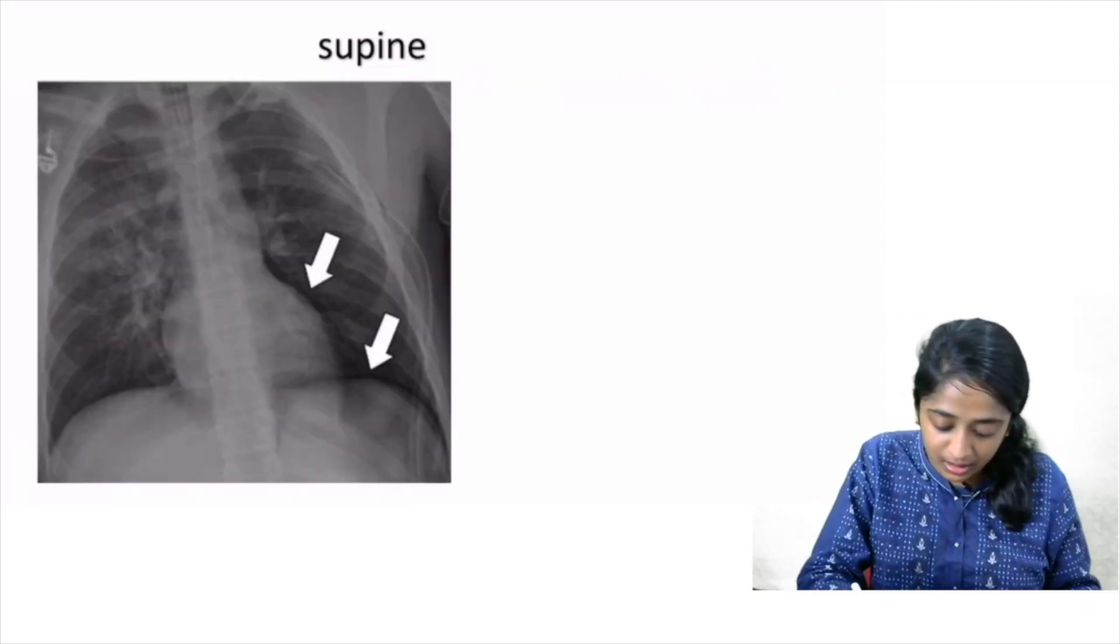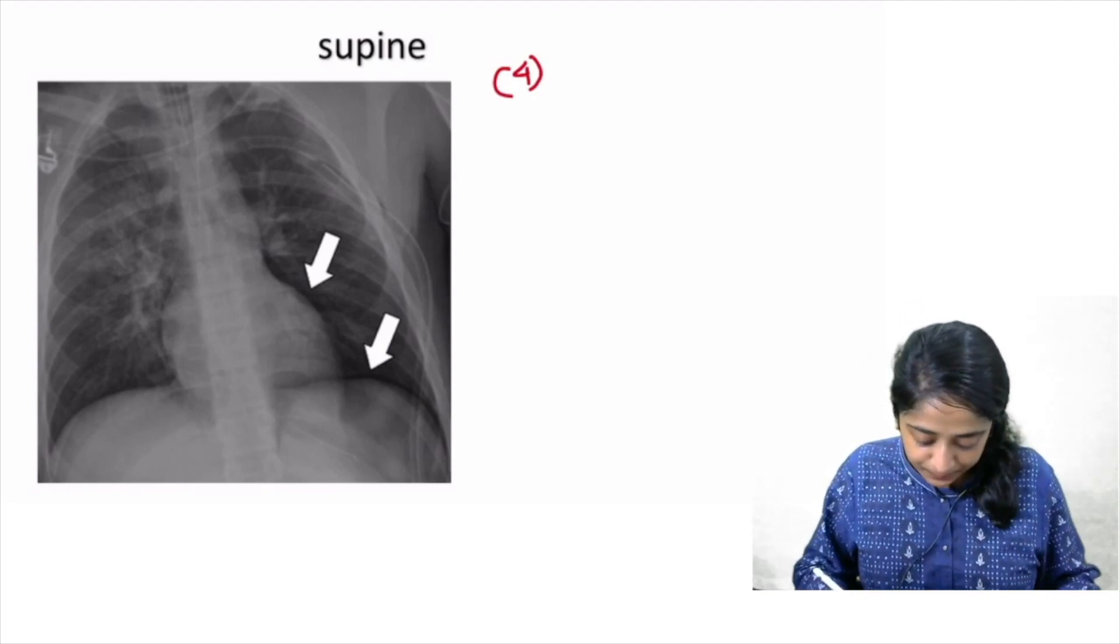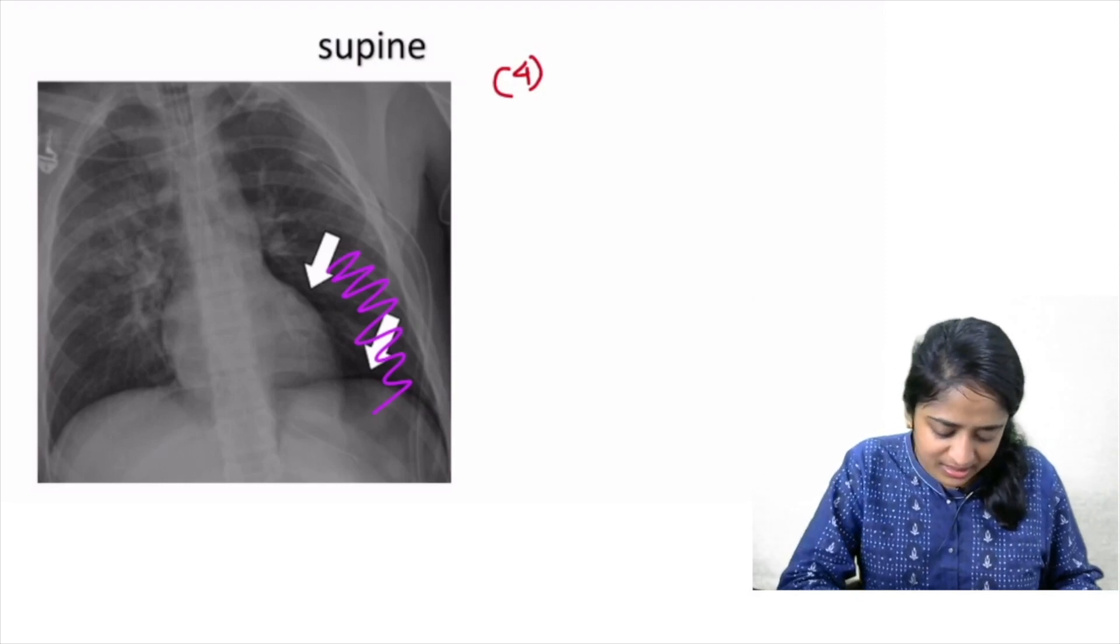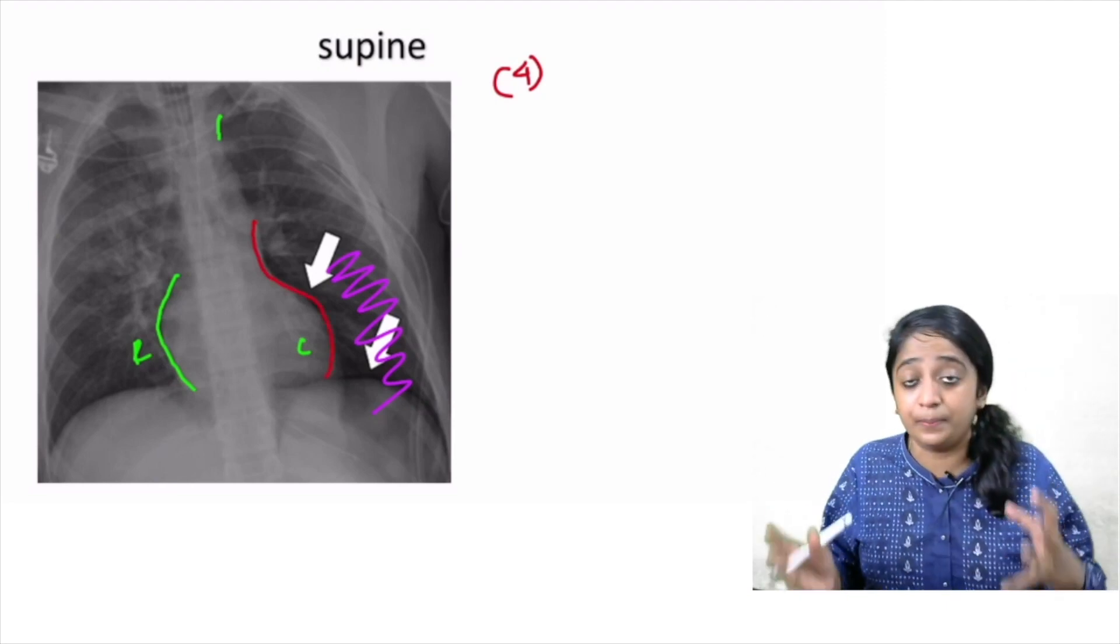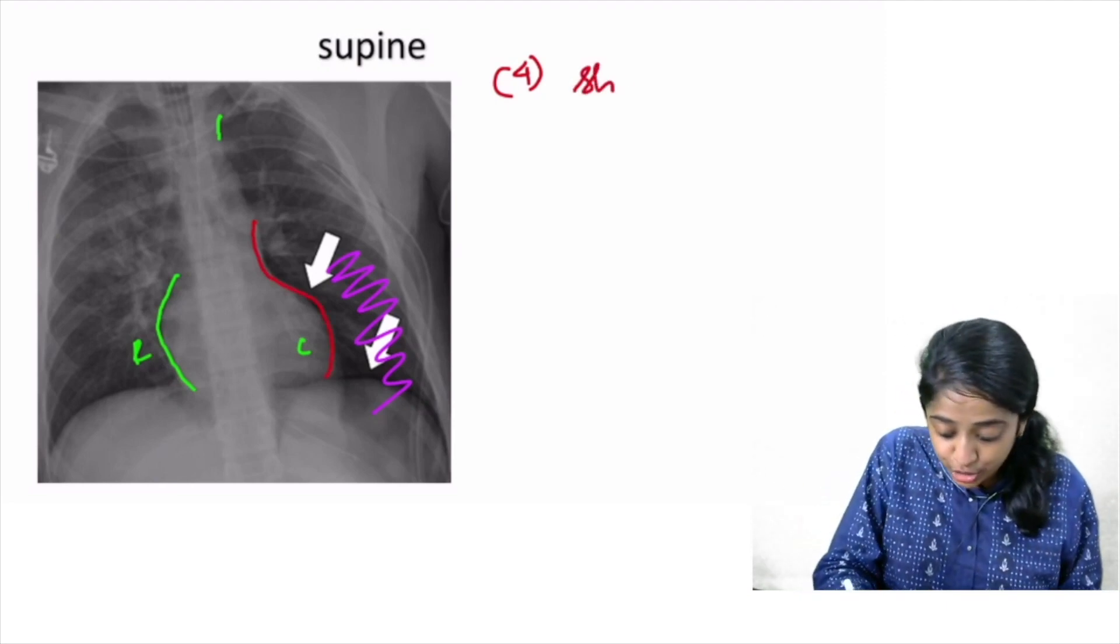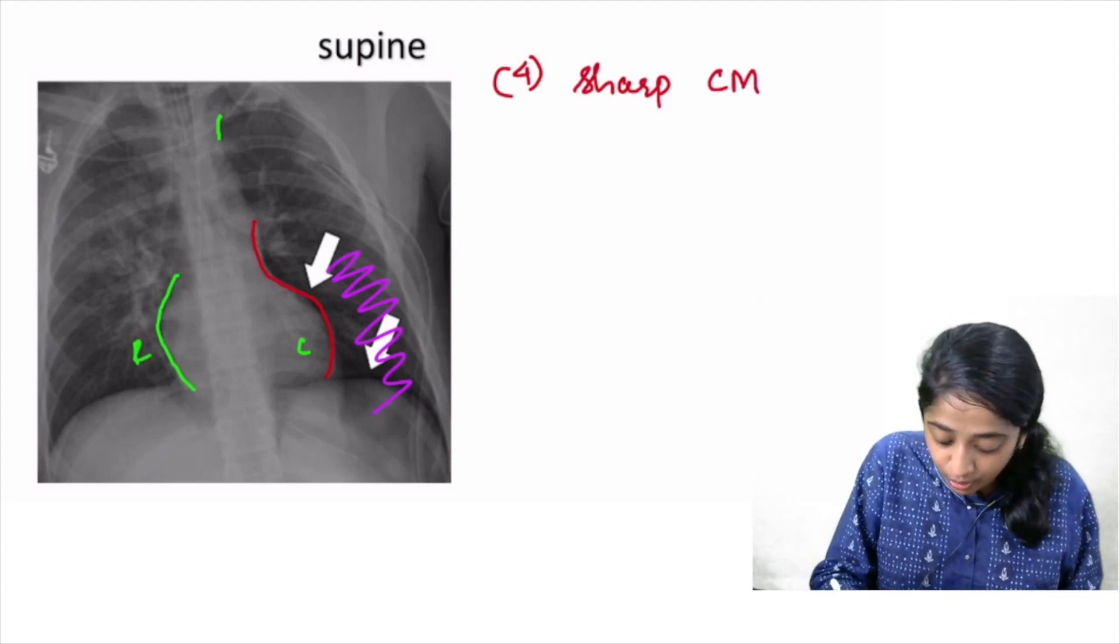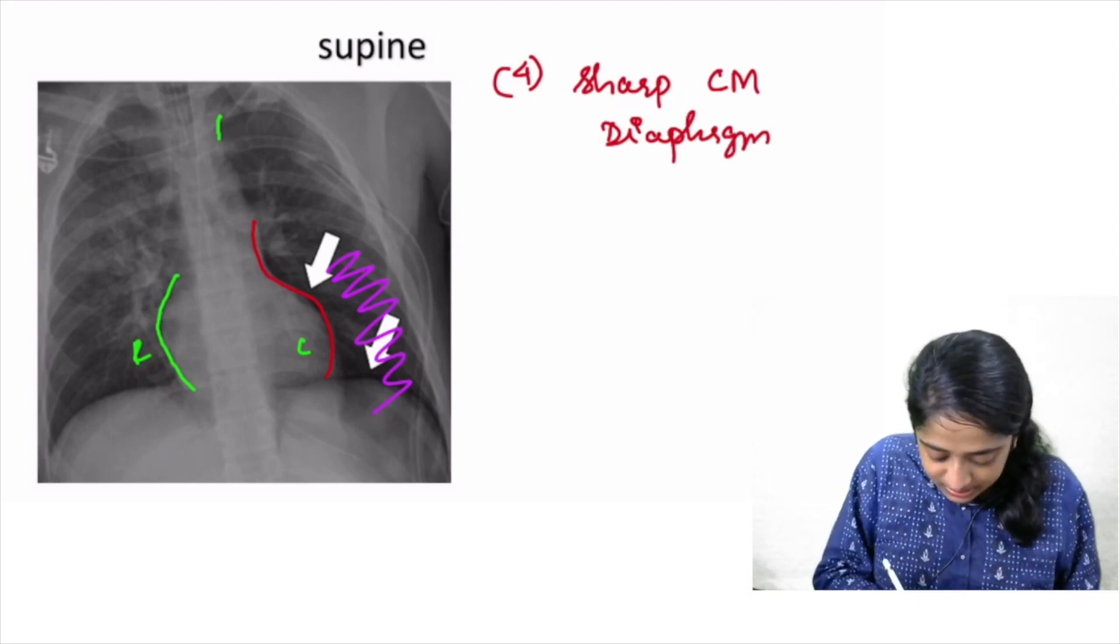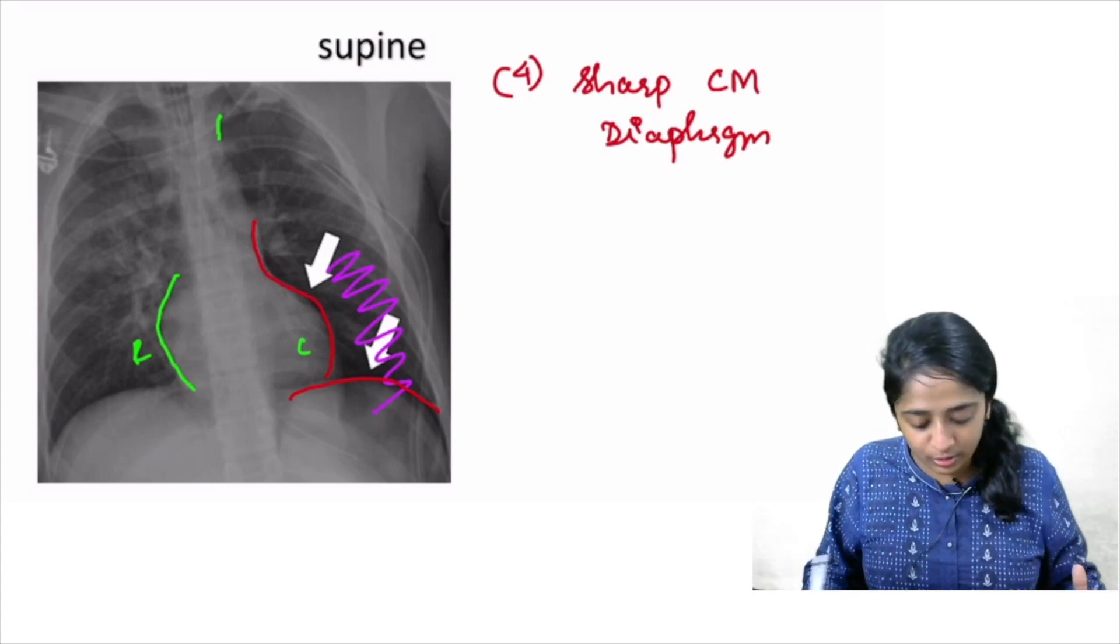Now coming to the fourth important sign that you can look for in supine radiograph. In addition to transradiancy, what else is apparent? As compared to the right side, the left side, the cardiomediastinal silhouette is appearing more sharp. So sharp contour of the cardiomediastinal silhouette or the diaphragmatic contour. Both are important signs of pneumothorax on supine radiograph. Very important.